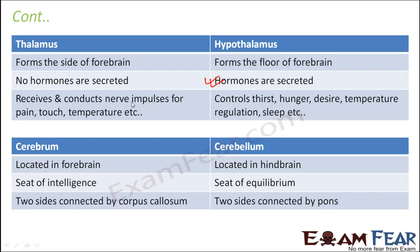Thalamus receives and conducts nerve impulses for pain, touch, temperature, etc. Whereas hypothalamus, since it secretes hormones, can control different types of feelings like thirst, hunger, desire, temperature, sleep, etc.